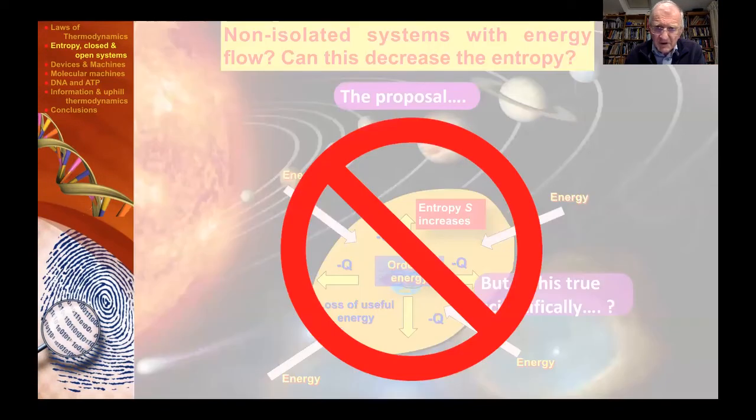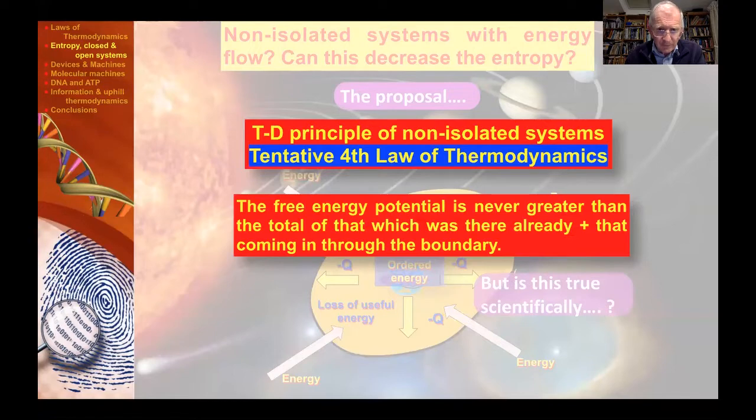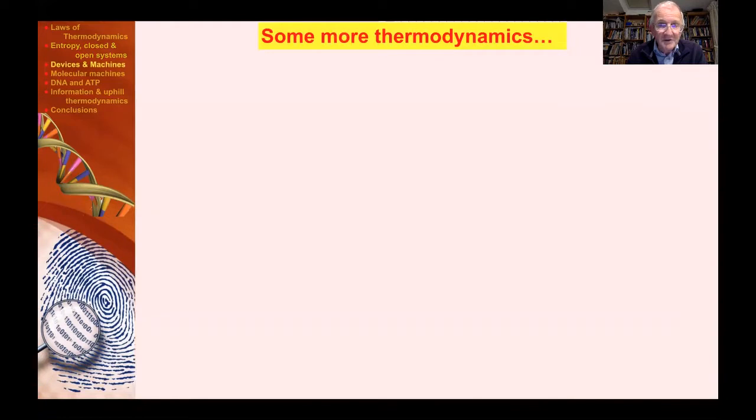Having defined free energy, we now consider again this proposal by Dawkins and others. Frankly, is that possible? The answer is no. Real systems don't work like that. Random energy doesn't build machines because of this fourth principle. The free energy potential, which is vital for energy being used by that particular machinery, is never greater than the total of that which was there already and that which may be coming in through the boundary. In other words, you've got to have something like a solar cell, which is an artificial equivalent of the leaf I was talking about. That's got to be there already, ready to receive the energy from the sun.